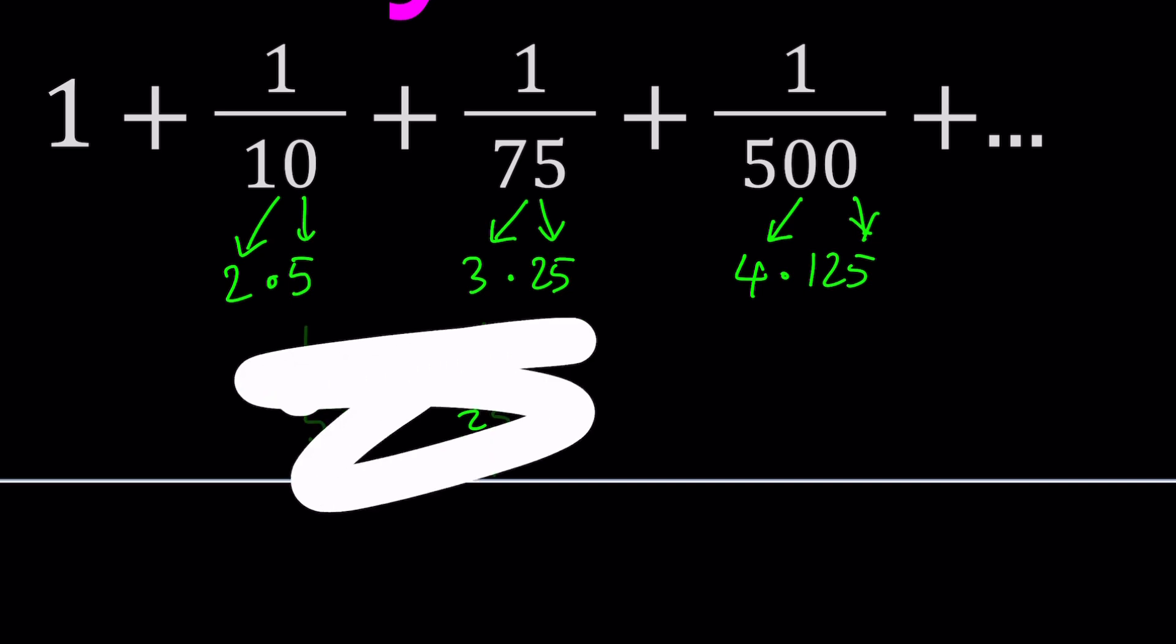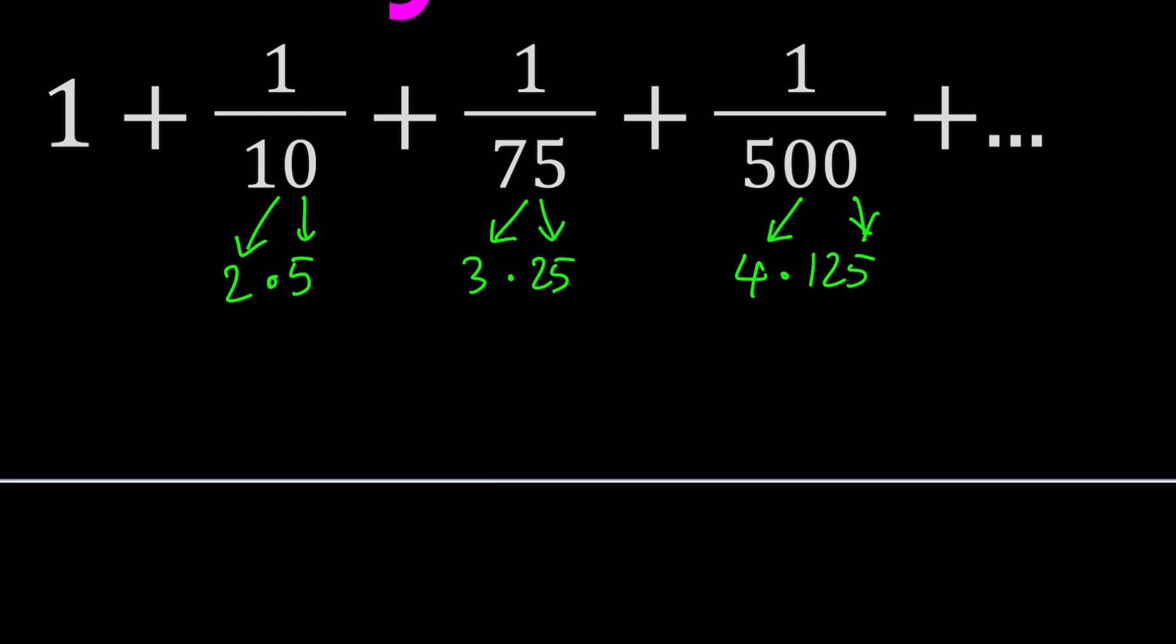Let's write it this way. We'll write one over two times five as one over five divided by two, then one over 25 divided by three, then one over 125 divided by four, and so on. You get the pattern?